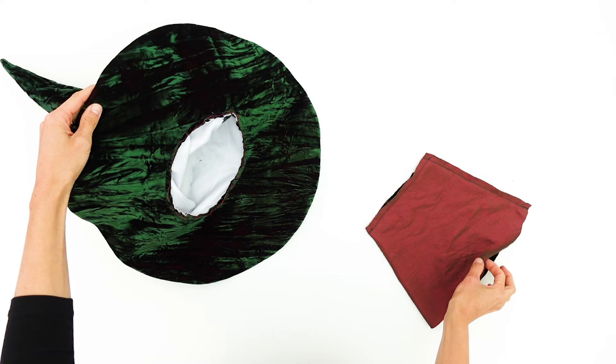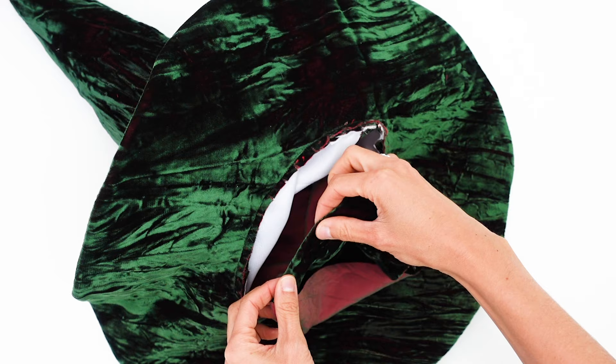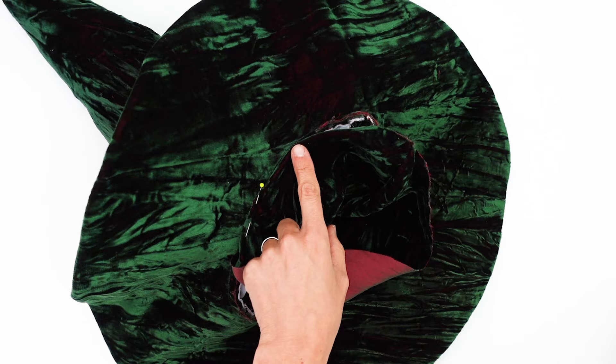So the way to do it is to fold the edge of the lining at about 1cm and to pin it all around the opening of the hat. It is possible to sew this lining in place with a sewing machine,